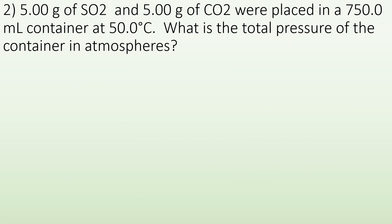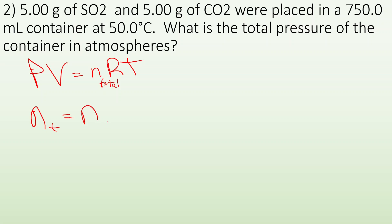Number two: 5 grams of SO2 and 5 grams of CO2 were placed in a 750 milliliter container at 50°C. What is the total pressure of the container in atmospheres? Again we have PV = nRT, and if we want the total pressure, the moles we want to use is the total — all of the moles of all the gases. So I need to find the moles of SO2 and the moles of CO2.